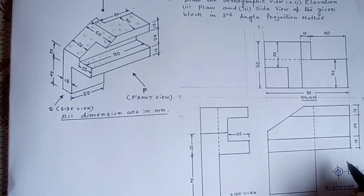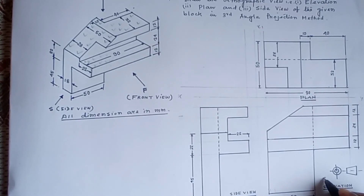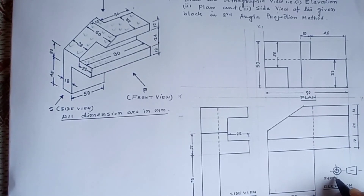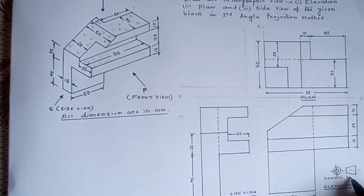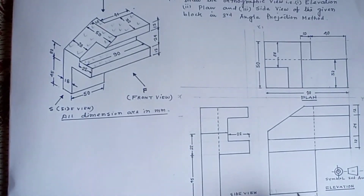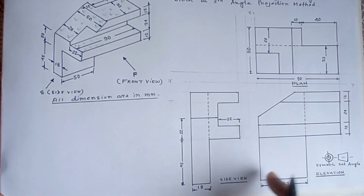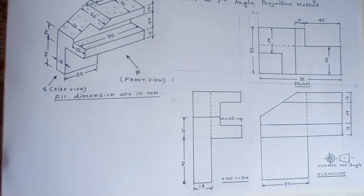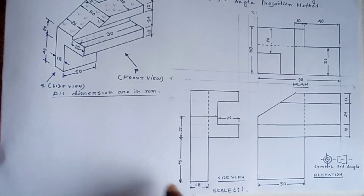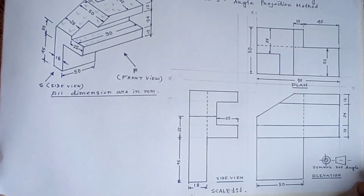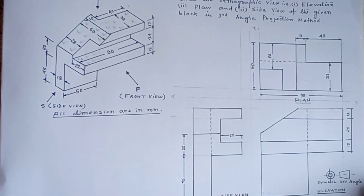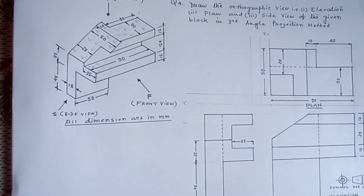This is the symbol — all dimensions in millimeter. This is the plan, this is the elevation, and this is the side view. All dimensions are in millimetres, scale 1 is to 1. So we can complete the drawing in all respects.